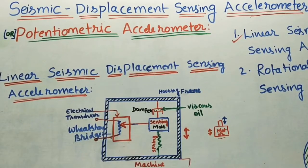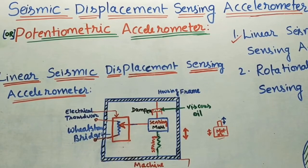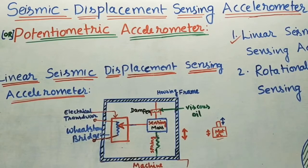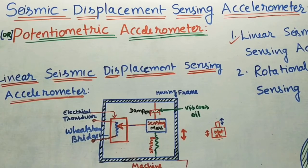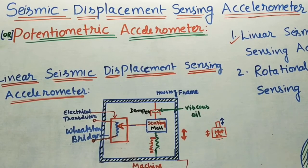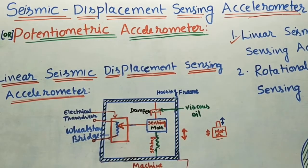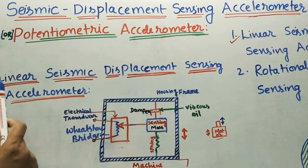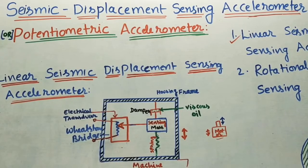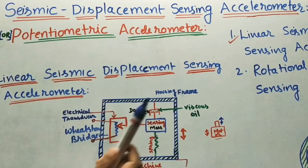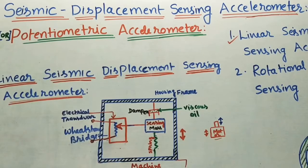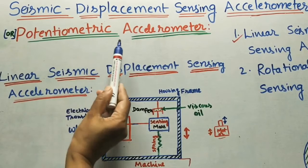Let us discuss about the seismic displacement sensing accelerometer. Accelerometer means this transducer is measuring the accelerations or vibrations of a given machine, motor, or engine. Seismic displacement is related to earthquake vibrations — those related vibrations we are calling seismic displacement. So this accelerometer is used for measuring earthquake vibrations also. We are calling it with another name: potentiometric accelerometer.